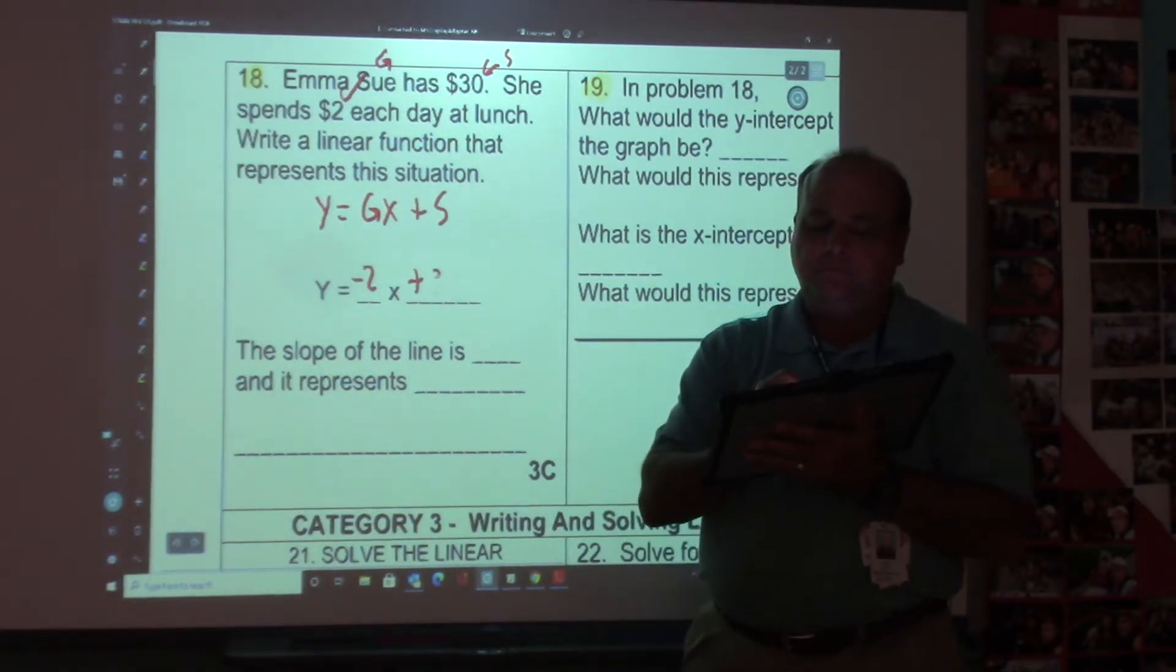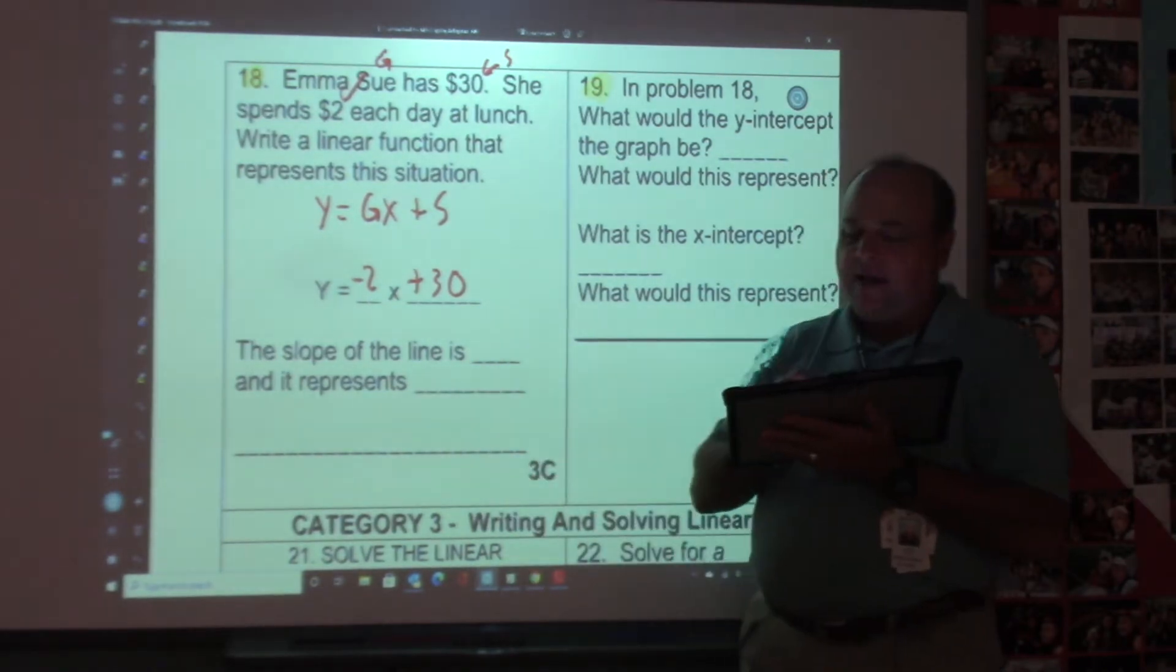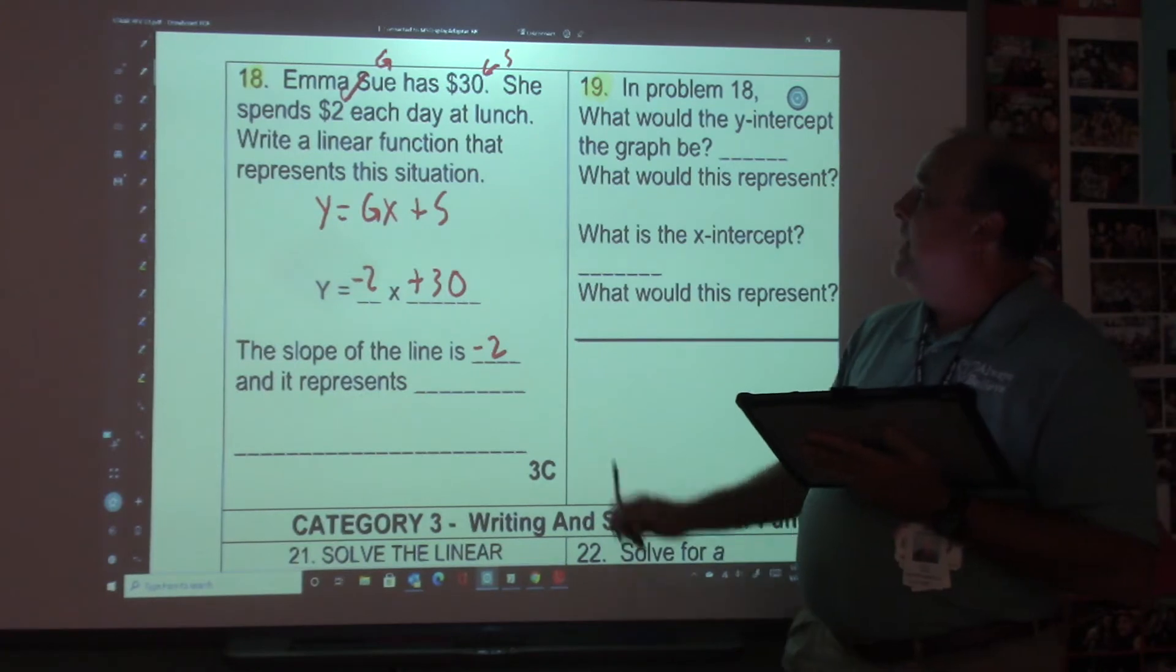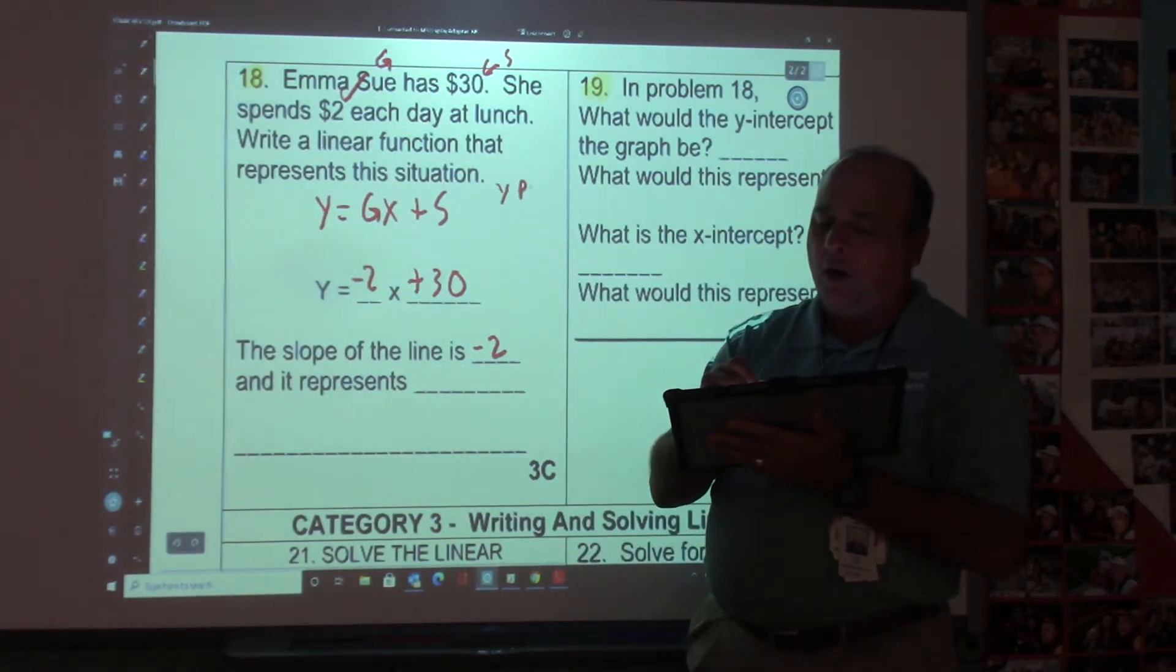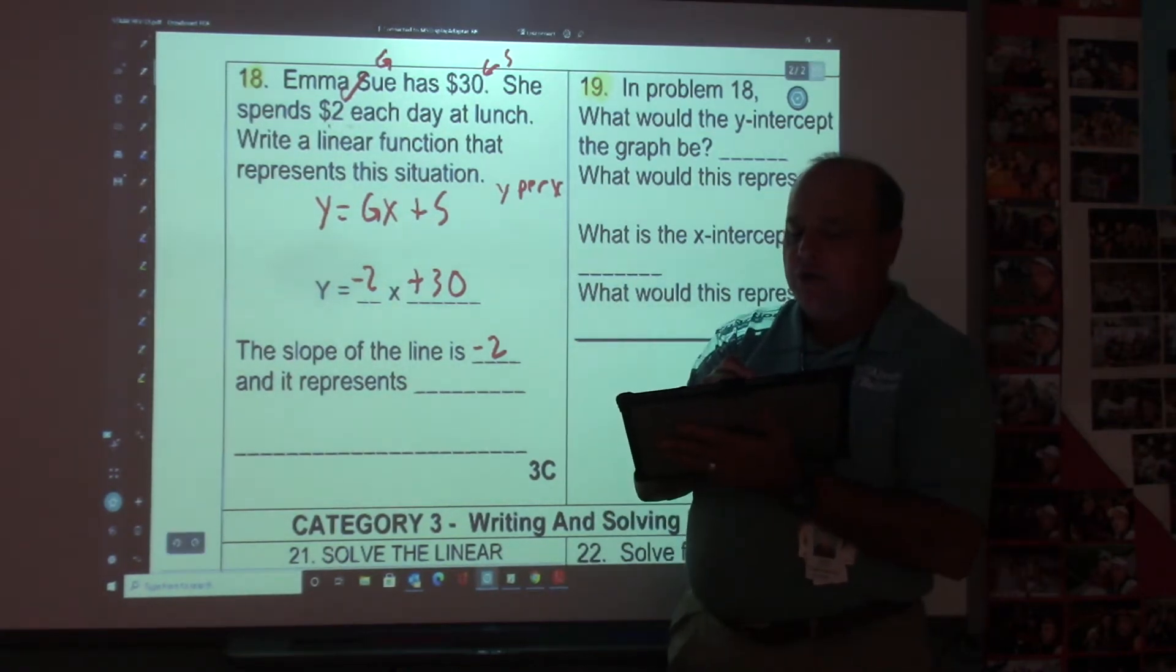So the equation is going to be negative 2X plus 30. The slope of the line is negative 2. Remember, slope is Y per X. This is extremely important. You're getting this. Underline your slope right here.